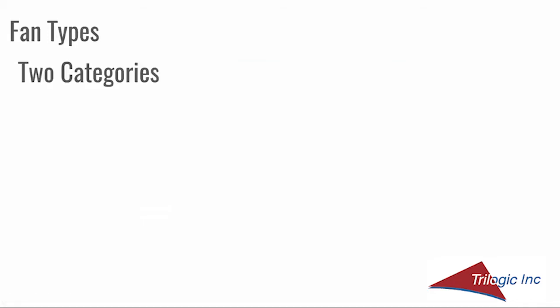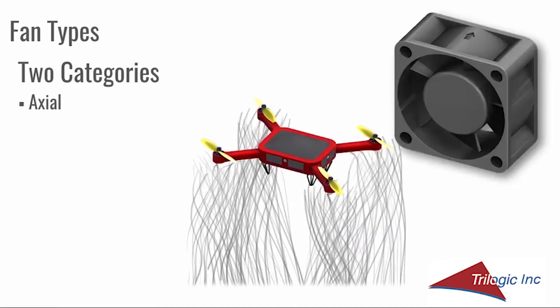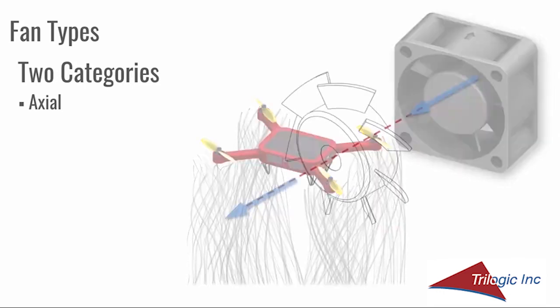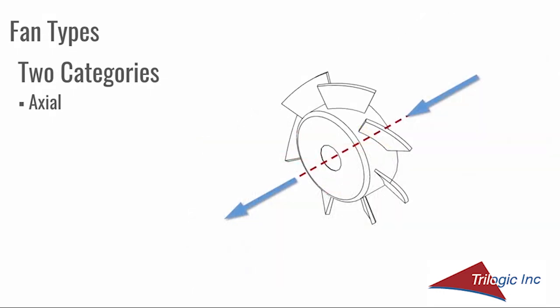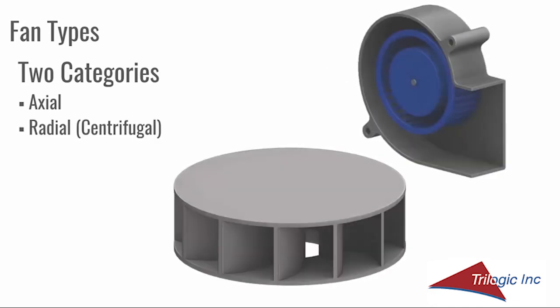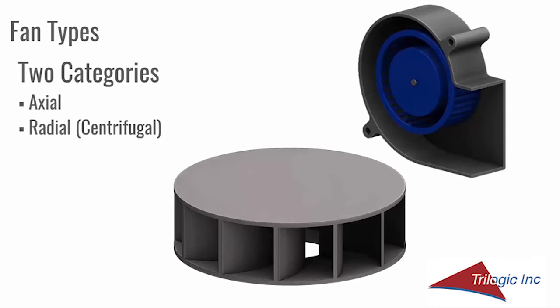Fans, or air movers, can be grouped into two categories. The first category is axial. Two examples shown are a drone and the axial fan, a workhorse in the electronics industry. These fans are termed axial because the flow enters and leaves the fan along the axis of rotation, identified with a red dashed line, with blue arrows indicating the bulk airflow direction.